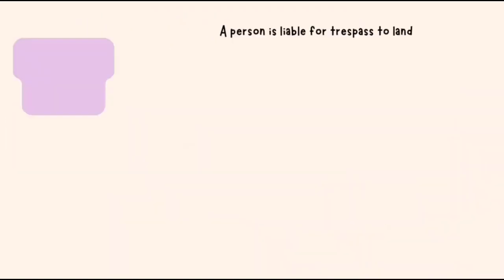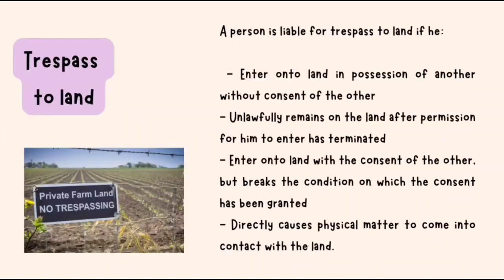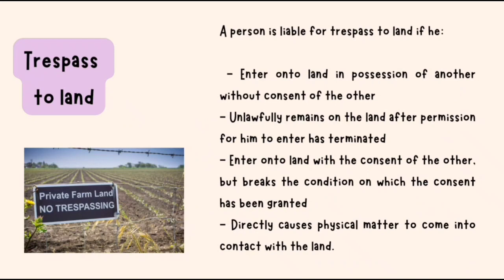Classes of Trespass. Trespass to land: an intentional act which directly interferes with enjoyment of land in the possession of another, causing damage to the land, whether by taking it, destroying it, or barring the owner's access to it. A person is liable for trespass to land if he, first, enters onto land in possession of another without consent of the other. Second, unlawfully remains on the land after permission for him to enter has terminated.